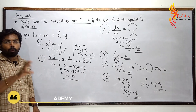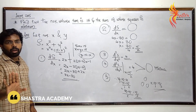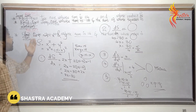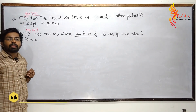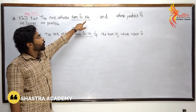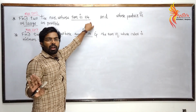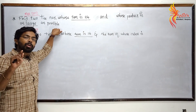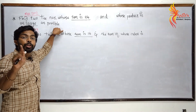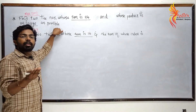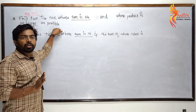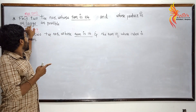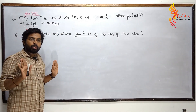We will learn a question in this model. The question is: find two positive numbers whose sum is 24, and whose product is as large as possible. Product is as large as possible — that means maximum. Let the numbers be x and y, so P equals x into y.